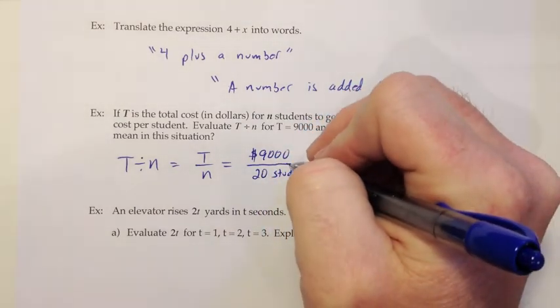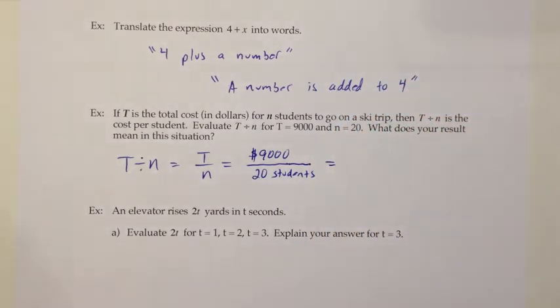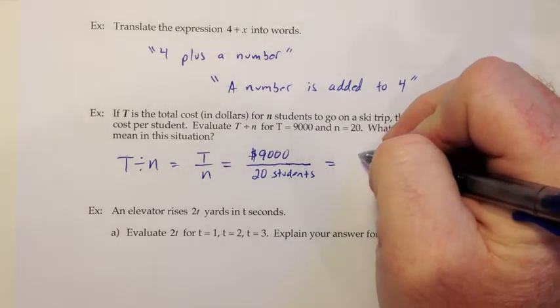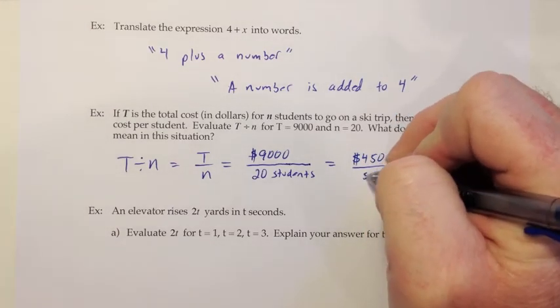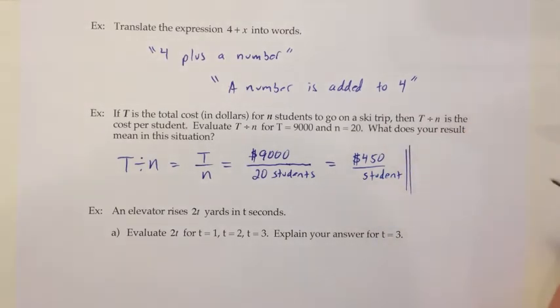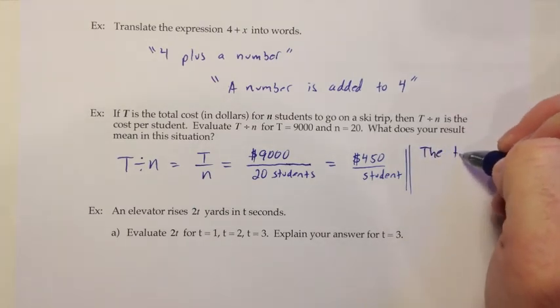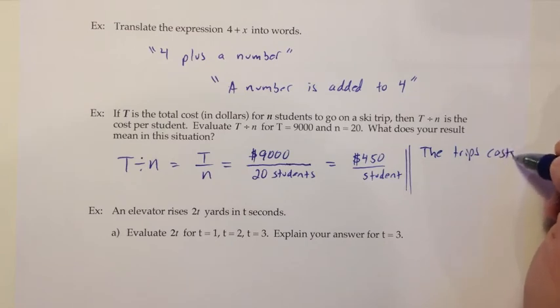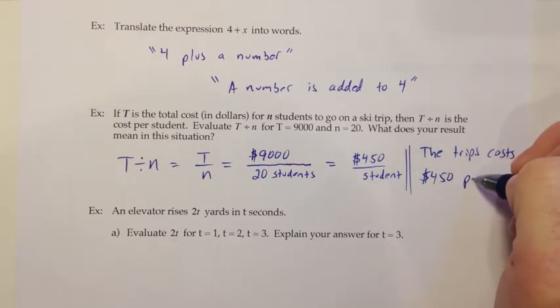This is a division problem, so you can just divide this out. 9000 divided by 20, and I get 450 for that, but 450 what? It's 450 dollars per student. So I'll just say that in words to express what it means, but the units are really helpful for that. The trip costs 450 dollars per student.